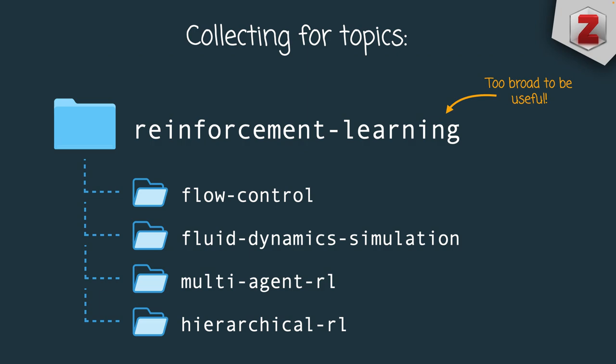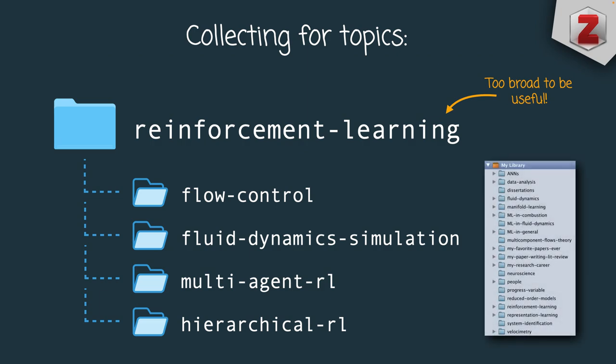An item that used reinforcement learning for flow control using multi-agent reinforcement learning can be located in two sub-collections. My advice is to create as few high-level collections as possible — having too many will make searching for a specific publication much more difficult. I have just a handful of main categories, but I create many sub-collections inside each category.